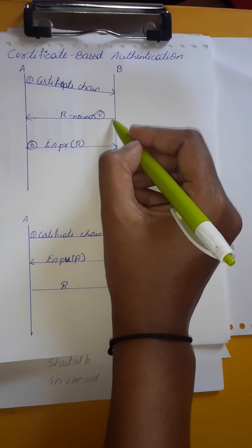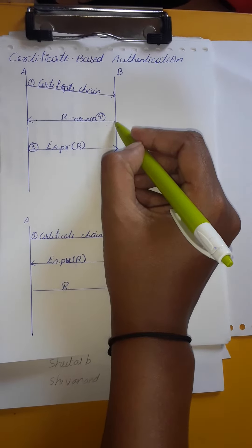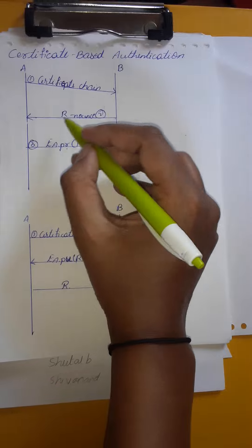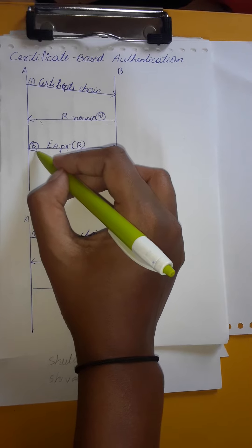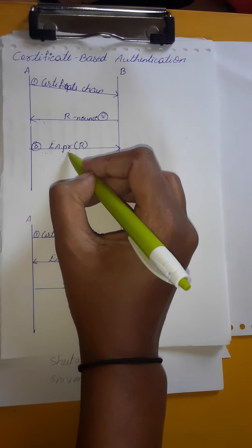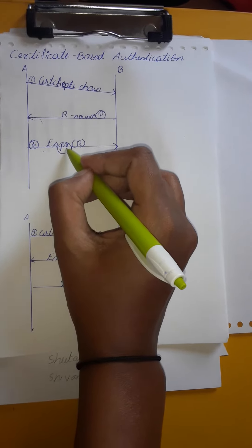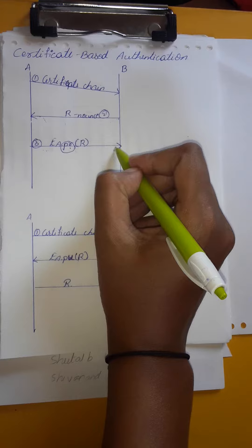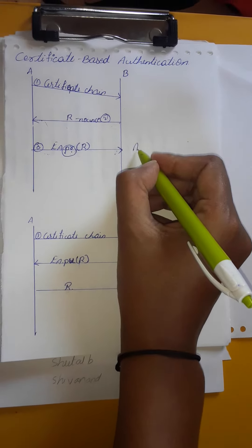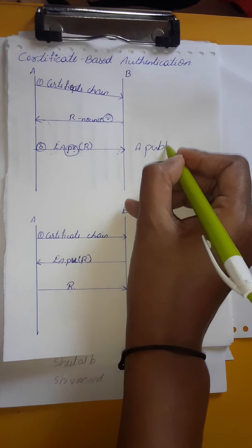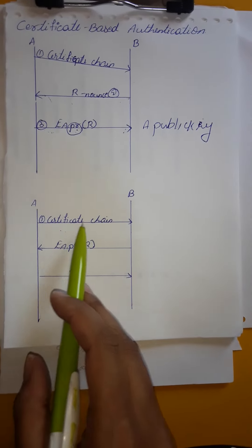After that, B is going to generate one random number — that is the nonce, or the challenge — and that challenge will be sent to A. After receiving that message, A is going to perform an encryption operation on the nonce by using A's private key, and that encrypted message will be sent to B. After receiving the third message, B is going to perform the decryption operation by using A's public key.